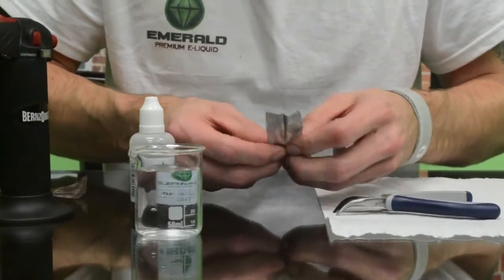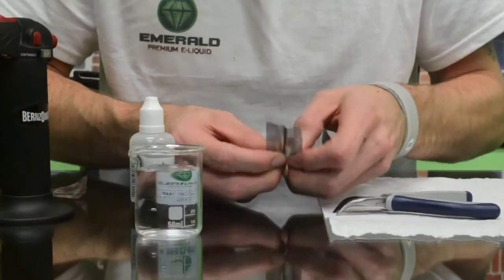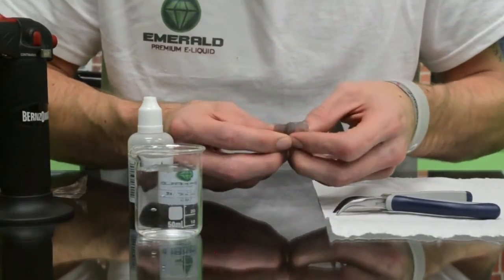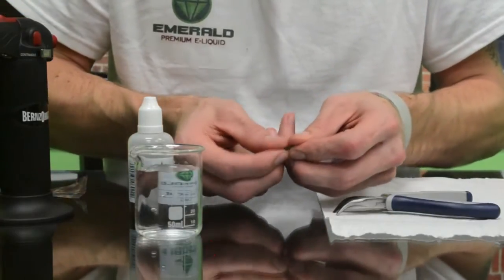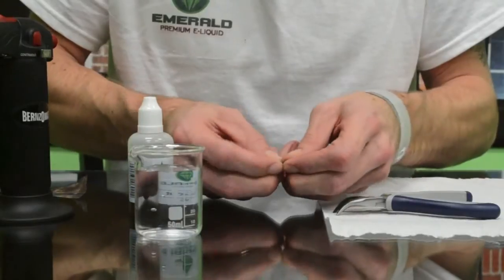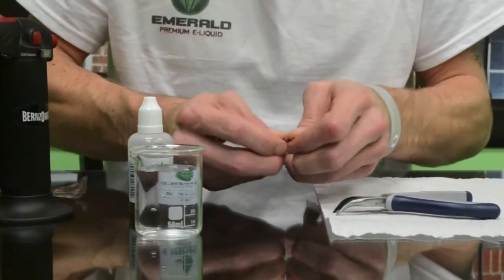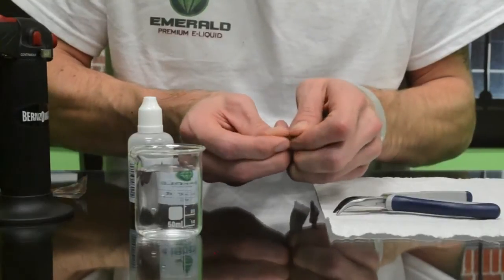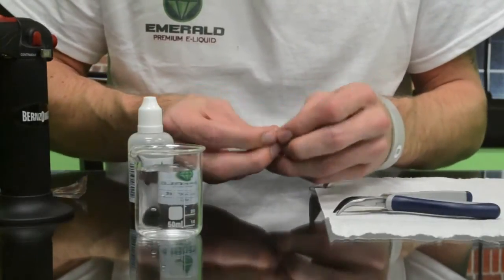Roll it up as tight as you can. The mesh is pretty grippy, so once it's rolled up, if you just roll it back and forth it will get tighter as you go, and you can work it down until it's really tight.